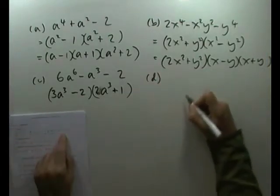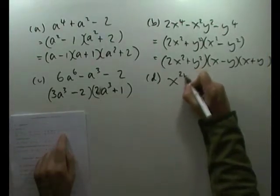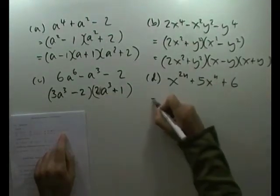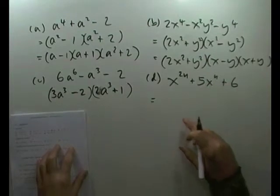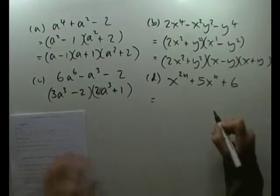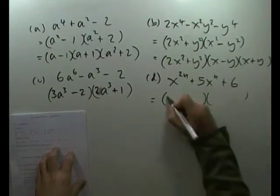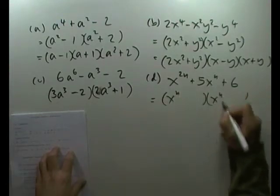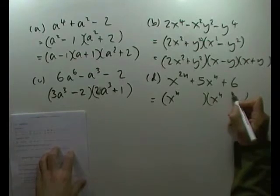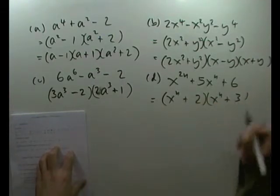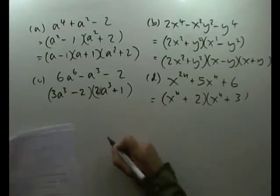D. Part D. x to the 2n plus 5x to the n plus 6. Still a quadratic because I've got the even powers. This time it's a quadratic in x to the n and a constant. So it's just going to be x to the n times x to the n. And then the 1 and the 6, that must be 2 and 3. So that gives me plus 2 plus 3.